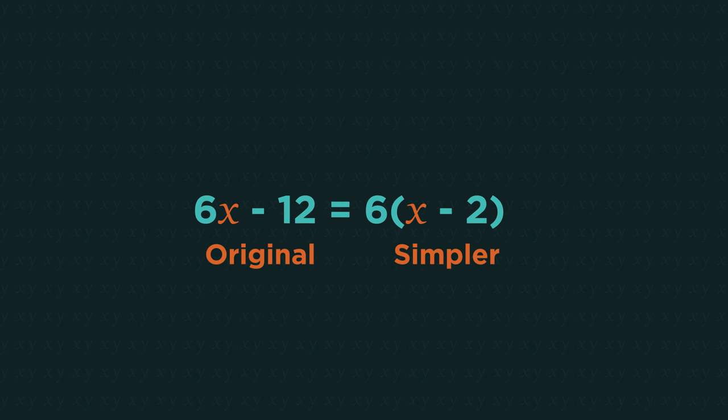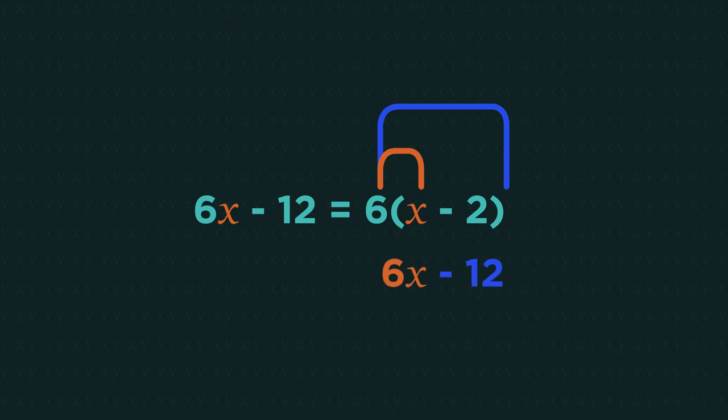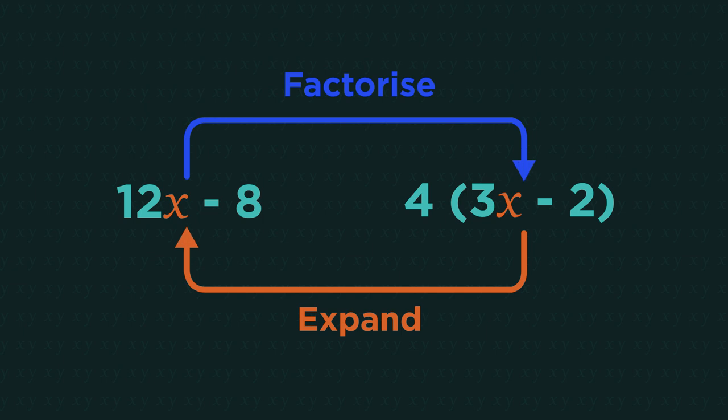Then if we multiplied our factors together we'd get back to 6x minus 12. Factorizing is just the opposite of expanding brackets. Expanding gets rid of the brackets, factorizing puts into brackets.